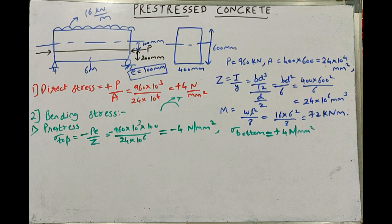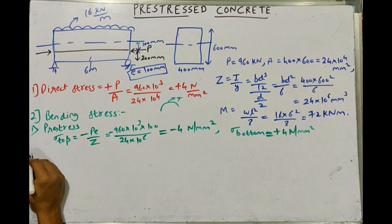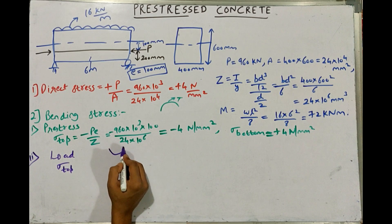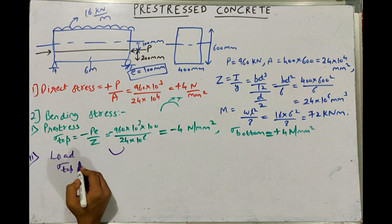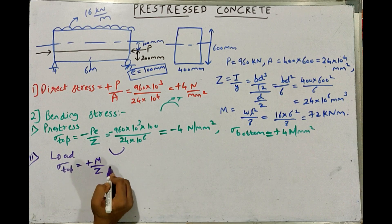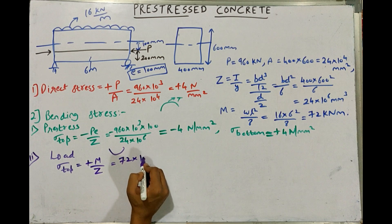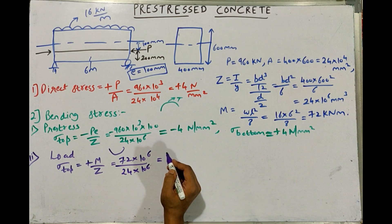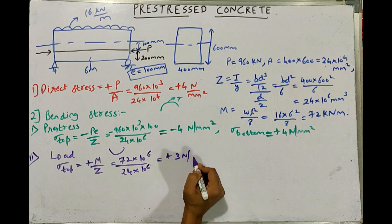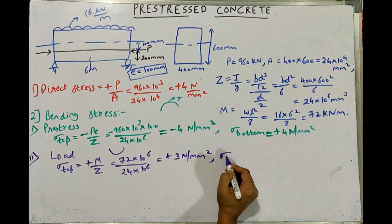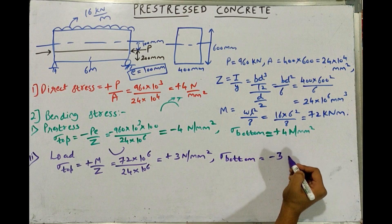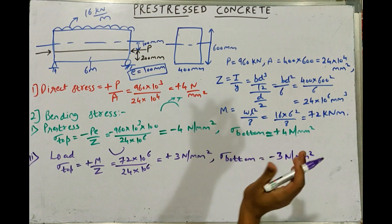The second bending stress component is due to the applied load. Due to the load the beam sags, so compression develops at the top. Sigma top due to load = +M/Z = +(72 × 10⁶)/(24 × 10⁶) = +3 N/mm². Similarly, sigma bottom due to load = −3 N/mm². We have now found all the stresses acting on the system.